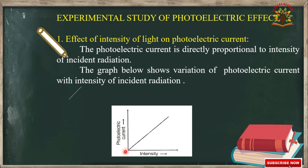From this graph, it is clear that photoelectric current is directly proportional to the intensity of incident radiation. As we increase the intensity along the x-axis, the current also increases linearly.